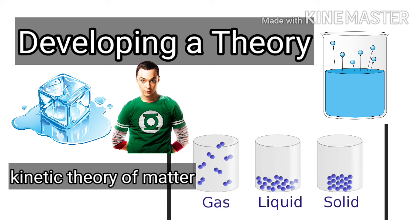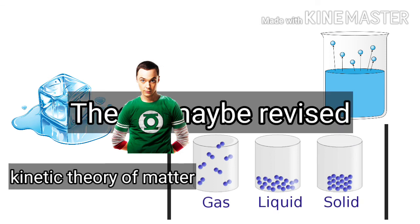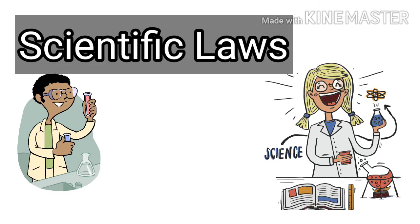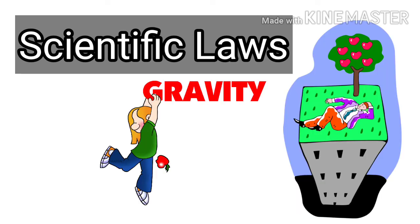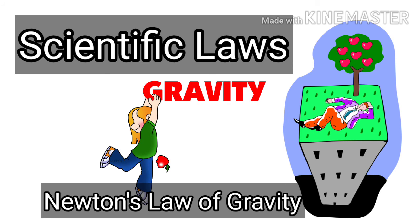After repeated observations or experiments, scientists may arrive at a scientific law. A scientific law is a statement that summarizes a pattern found in nature. For example, Newton's law of gravity describes how two objects attract each other by means of a gravitational force. This law has been verified over and over; however, scientists have yet to agree on a theory that explains how gravity works. A scientific law describes an observed pattern in nature without attempting to explain it — the explanation of such a pattern is provided by a scientific theory.